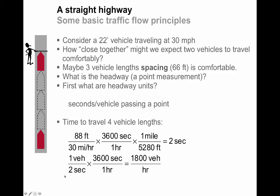So in order to do that calculation, we can use dimensional analysis. The distance that the vehicle is traveling is a total of 88 feet. That's four times 22 feet. The speed is 30 miles per hour. And if we want to express the headway in seconds, which we normally do, we just use dimensional analysis here. Thirty-six hundred seconds is equivalent to one hour. One mile is equivalent to 5,280 feet. So very conveniently, the headway here would be two seconds.